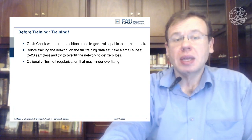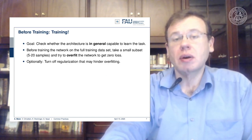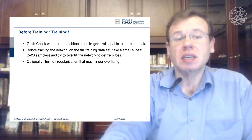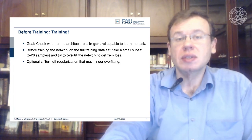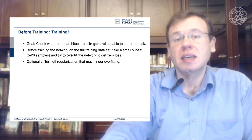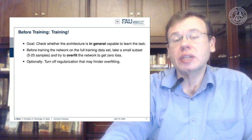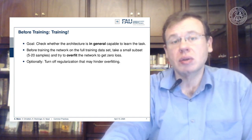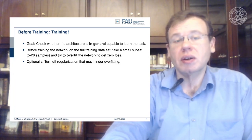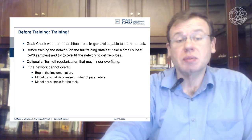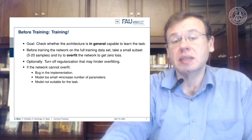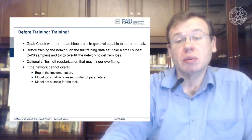Let's go to the training. First, check whether the architecture is in general capable of learning the task. Before training on the full dataset, take a small subset — maybe five to twenty samples — and try to overfit the network to get a zero loss. With so few samples, you should be able to memorize the entire dataset. This confirms your training procedure actually works. You can turn off regularization since it may hinder this overfitting procedure. If the network can't overfit, you may have a bug in the implementation, your model may be too small, or the model may not be suitable for the task.